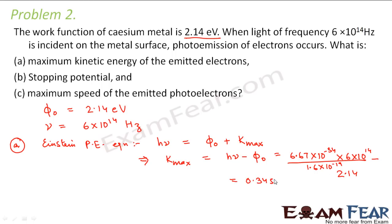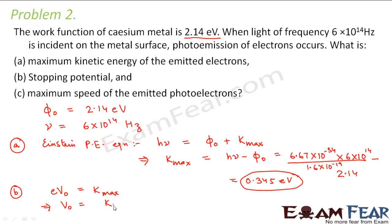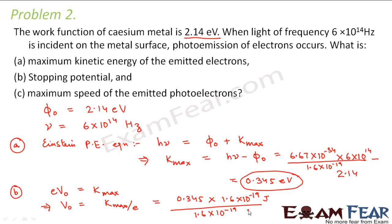This gives K_max = 0.345 electron volts — the maximum kinetic energy of the emitted electrons. For the second part, calculating the stopping potential: eV₀ = K_max, so V₀ = K_max / e. Converting 0.345 eV into joules: 0.345 × 1.6 × 10⁻¹⁹ joules divided by 1.6 × 10⁻¹⁹ coulombs — the terms cancel, giving a stopping potential of 0.345 volts.